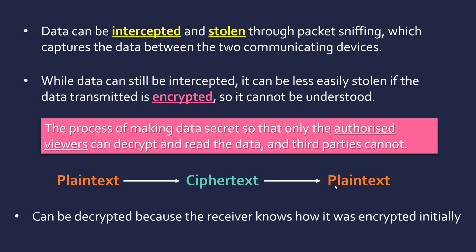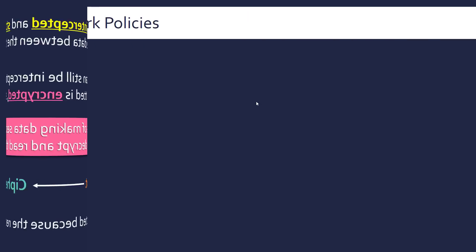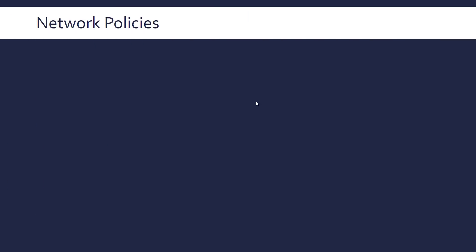The reason you can decrypt it is because the receiver knows how it was encrypted initially. There's an algorithm that changes the plaintext into ciphertext, and the person who receives it knows the way to reverse it, so they can decrypt it back into plaintext.